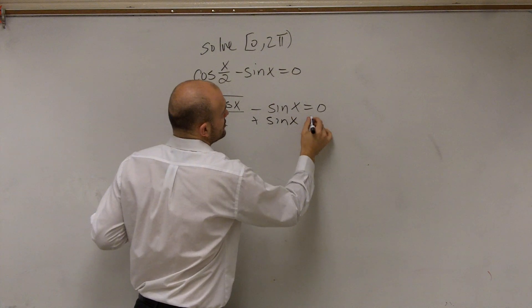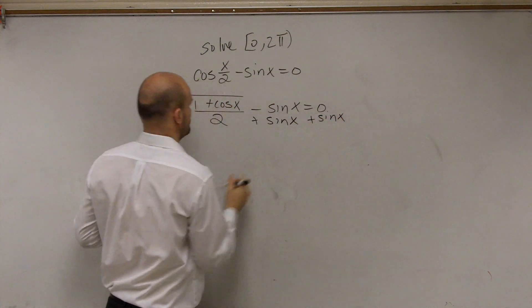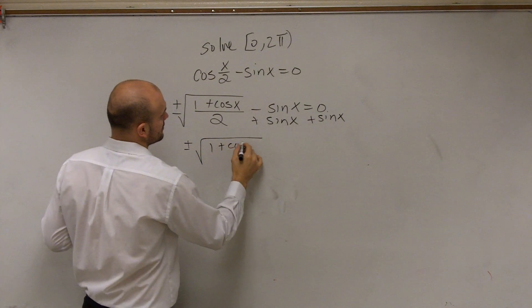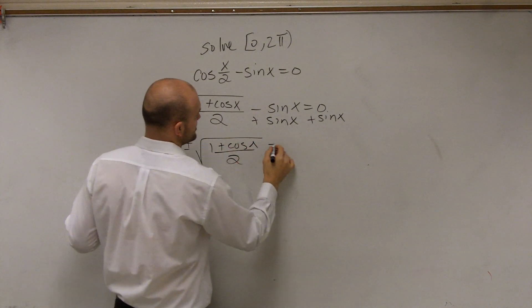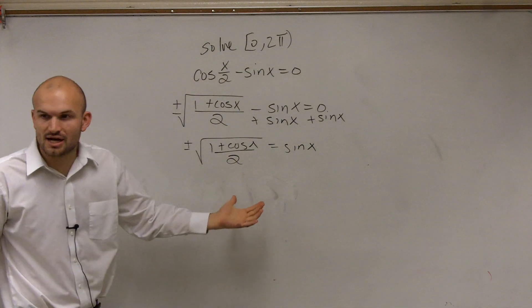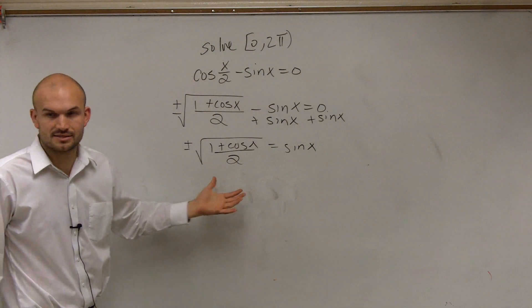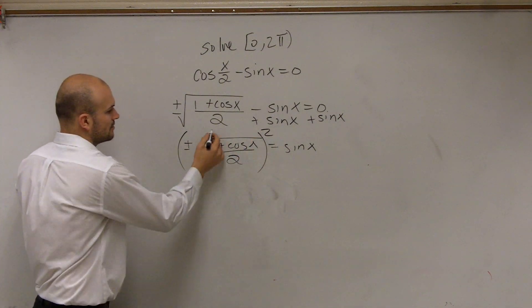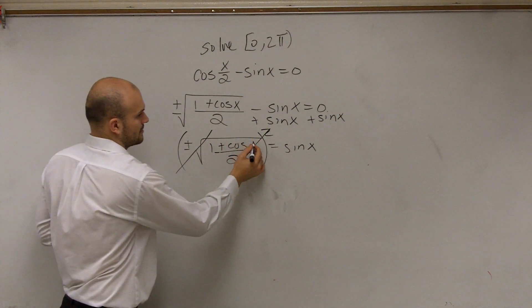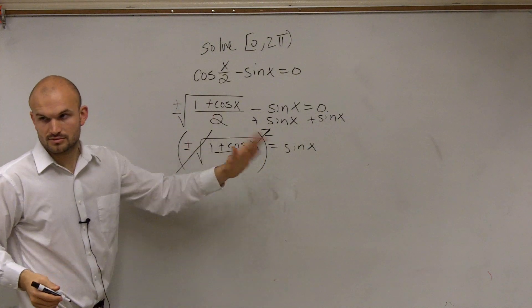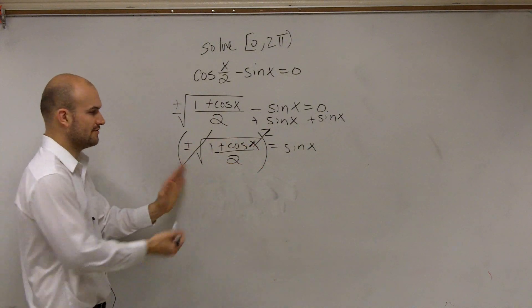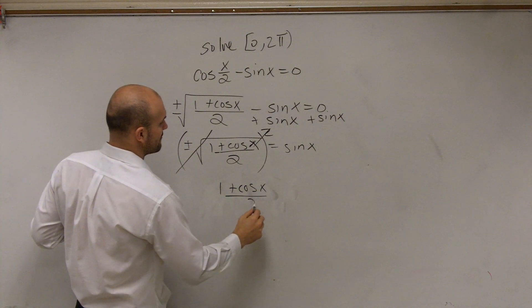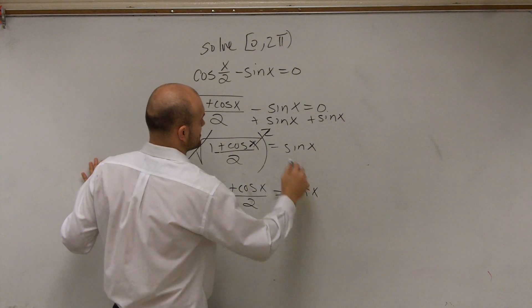So therefore, I have plus or minus the square root of (1 + cos(x))/2 equals sin(x). Now that I have this isolated, I can square both sides. So if I take the square root and square something, those are inverse operations, right? They undo each other. So therefore, I'm just going to be left with (1 + cos(x))/2 equals sin²(x).